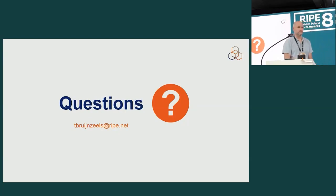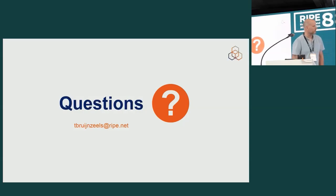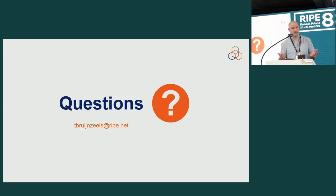There is one question — it's about the main website, about a search. I don't think I'm the one to answer that question, to be honest. I know that there has been discussion about that when the new website was launched. The search on the main website — I think it used to be easier to search the RIPE database immediately. I have to defer that question to somebody else, because I'm not part of that.